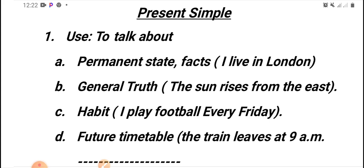We use it to talk about first, permanent state or facts like I live in London, general truth, for example, the sun rises from the east. Number three, habit. I play football every Friday, I go to school every day. Number four, future timetable, for example, the train leaves at 9 a.m.